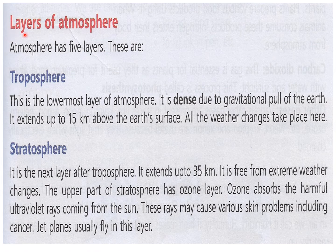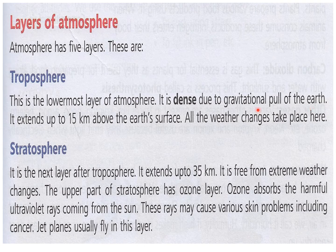The next topic is layers of atmosphere. The atmosphere around the earth is divided into five layers. The first layer near the earth is the troposphere — it is the lowermost and densest layer due to the gravitational pull of the earth, extending up to 15 kilometers above the earth's surface. All weather changes take place in the troposphere.